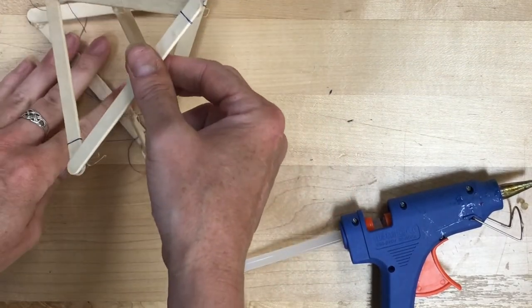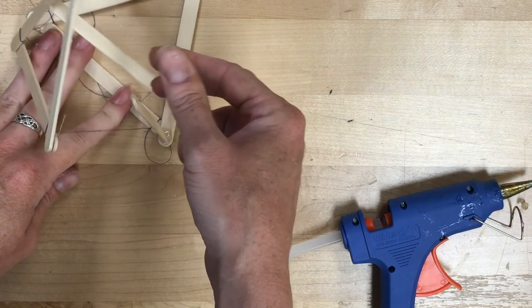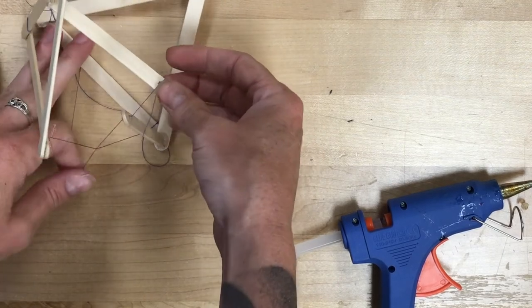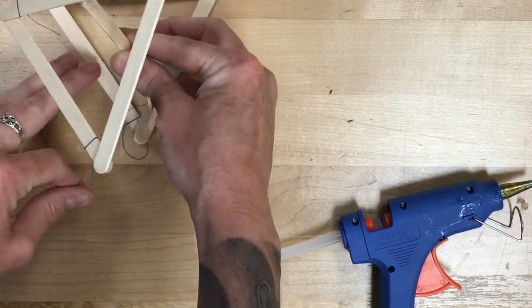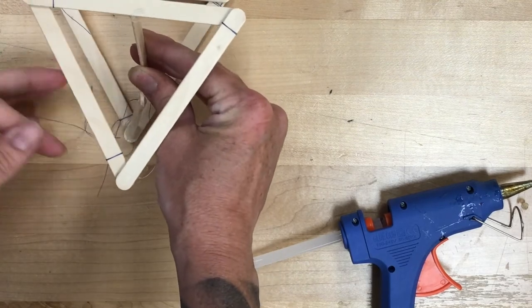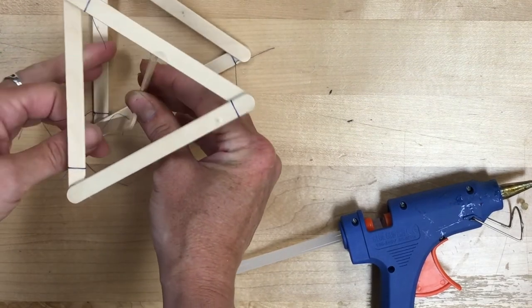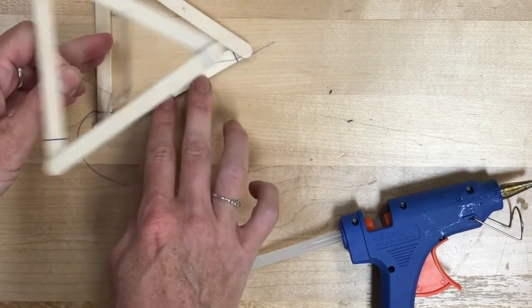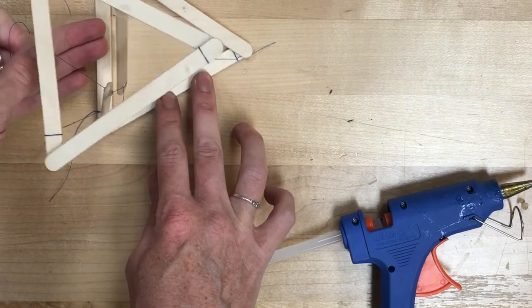But then I will string it through the hole in the other popsicle stick and I'm going to slowly pull it tight. And once I do, that top layer will pull up and we're going to have a structure.